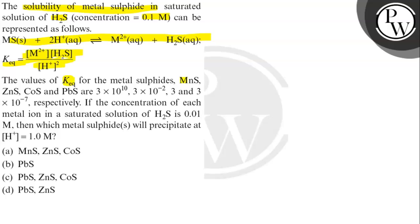The values of K equilibrium for metal sulfides MnS, ZnS, CoS, and PbS are given respectively. If the concentration of each metal ion in a saturated solution of H2S is 0.01 molar, then which metal sulfide will precipitate at H+ concentration of 1 molar? Let's see the given data.